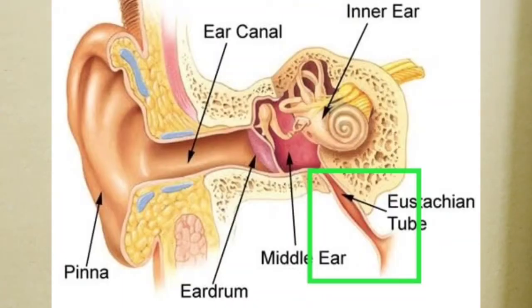The ear equalizes its middle ear pressure to that of atmospheric pressure through a ventilating pipe called the eustachian tube. If the eustachian tube is not able to immediately equalize the pressure, we can feel a blocked ear. A blocked ear feels like our ears are blocked, we feel a bit off balance, our own voice starts sounding a bit different, and we feel our hearing is a bit reduced.